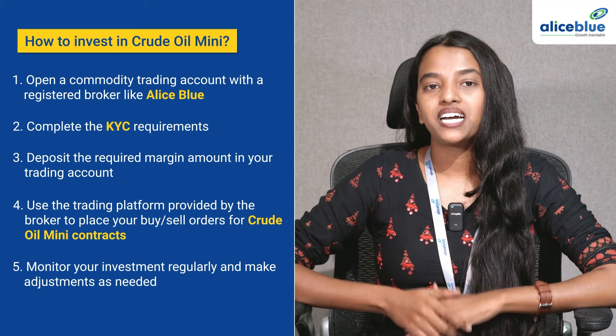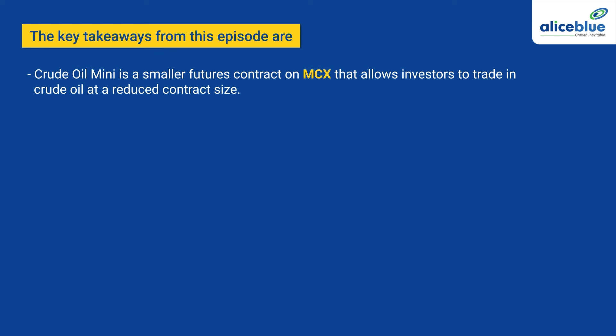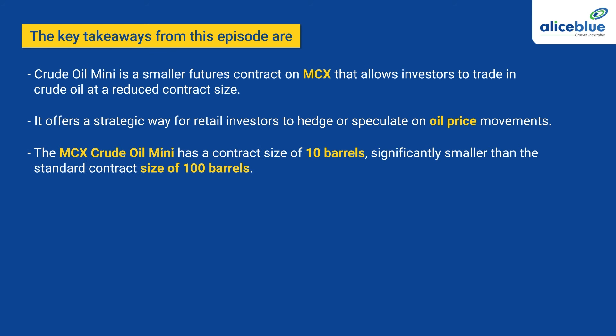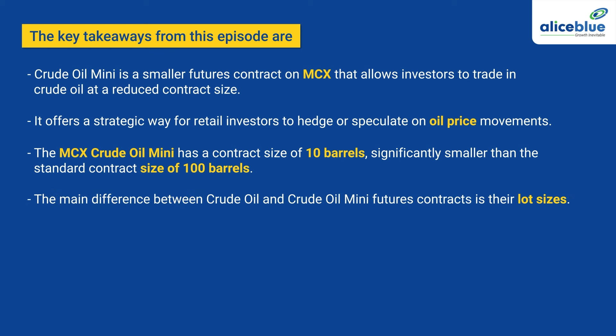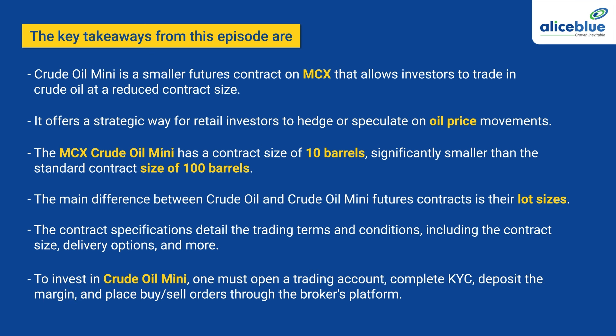Use the trading platform provided by the broker to place your buy or sell orders for crude oil mini contracts, and monitor your investment regularly making adjustments as needed. The key takeaways from this episode are: crude oil mini is a smaller futures contract on MCX allowing investors to trade in crude oil at a reduced contract size. It offers a strategic way for retail investors to hedge or speculate on oil price movements. The MCX crude oil mini has a contract size of 10 barrels, significantly smaller than the standard 100 barrels. To invest in crude oil mini, one must open a trading account, complete KYC, deposit the margin, and place buy or sell orders on the broker's platform.